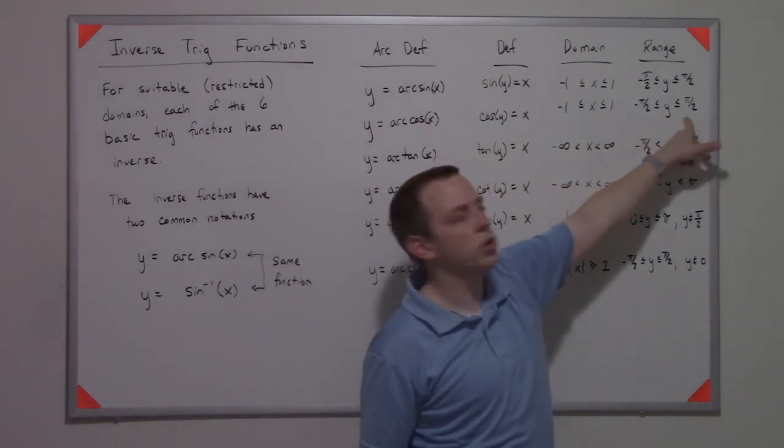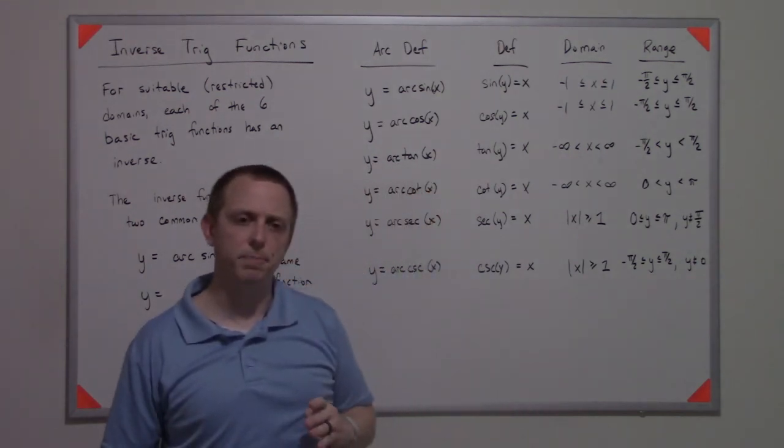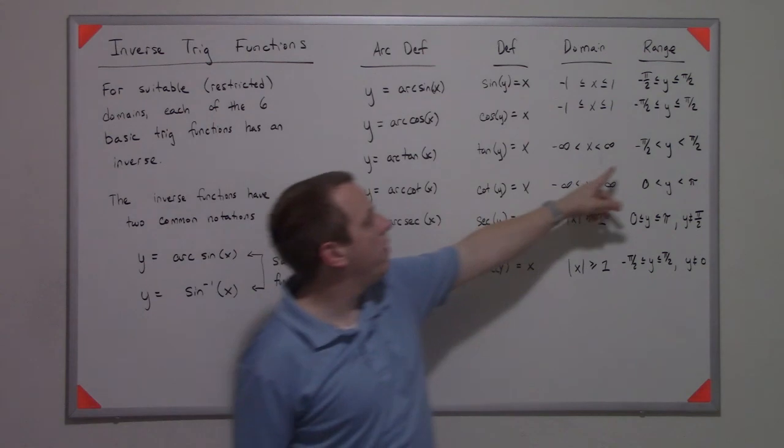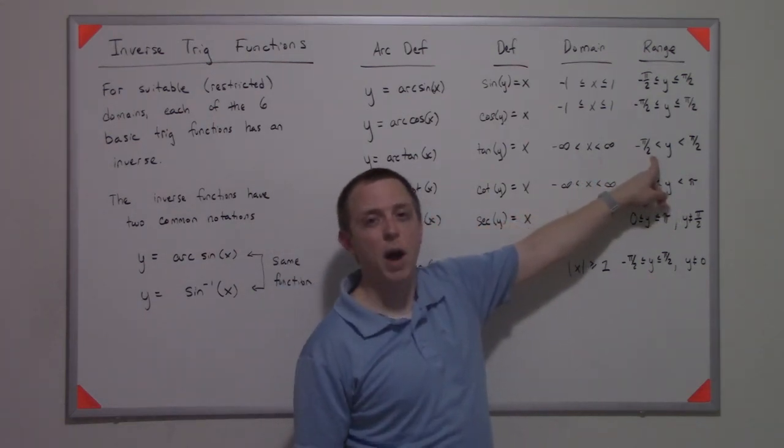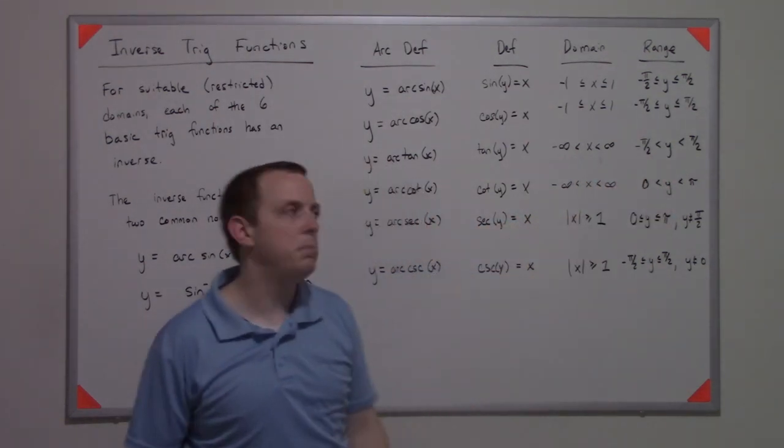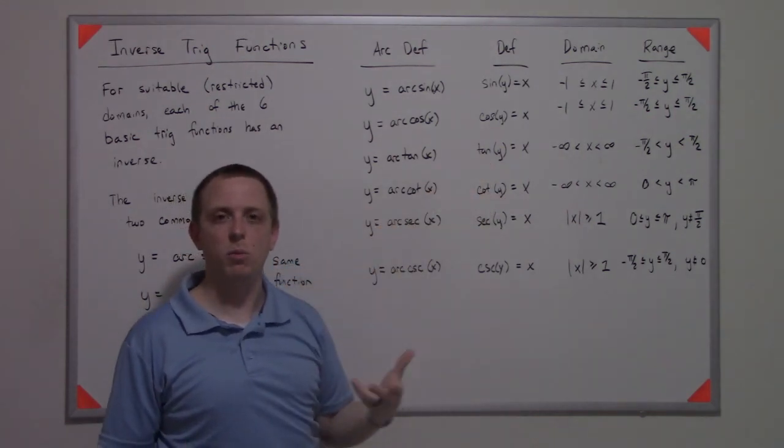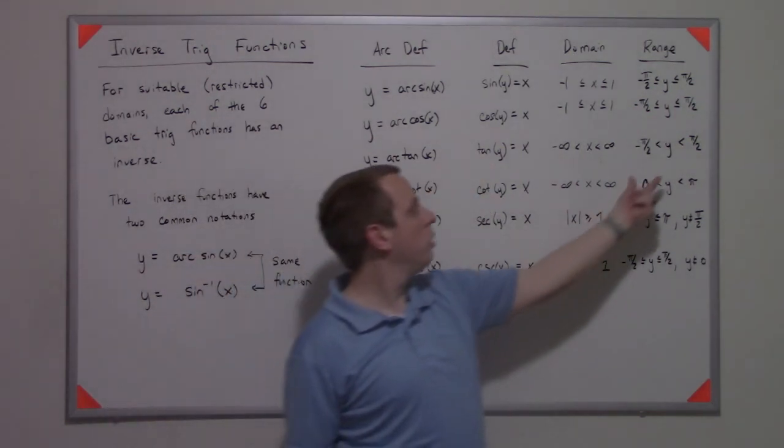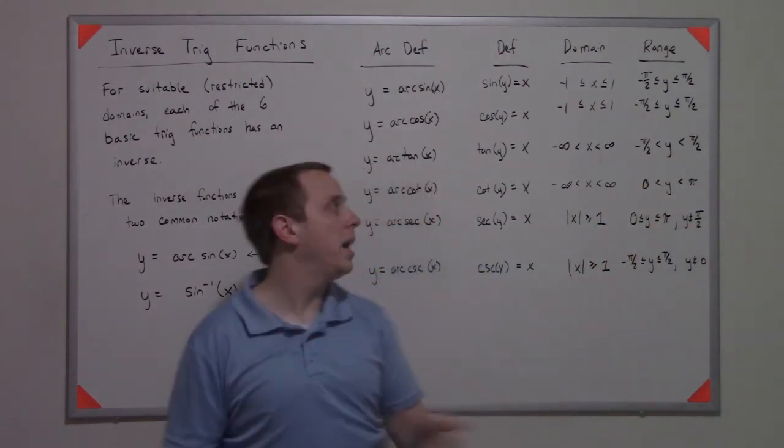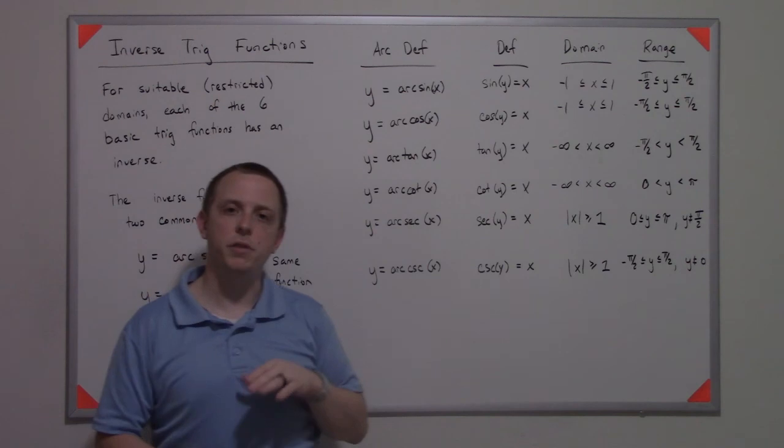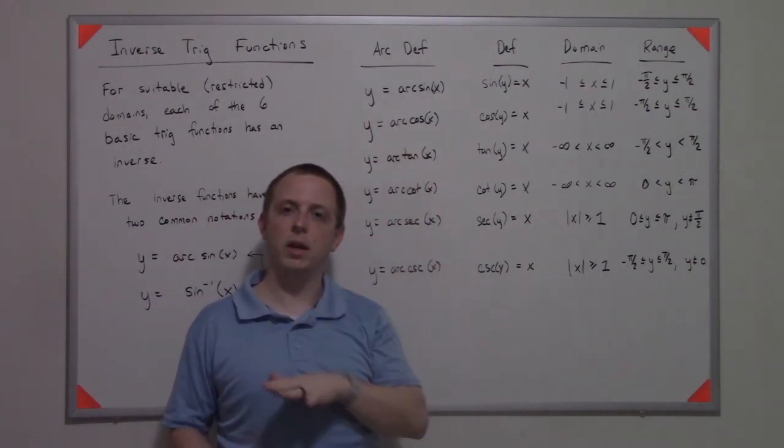For tangent, you don't have π over two included, and the reason is that you can't plug π over two into tangent because that would be a division by zero issue. So your range is restricted a little less, but your domain is perfectly fine. That's because if you think about the graph of a tangent function, it's a repeated graph kind of like x cubed.